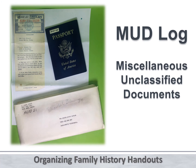My dad was an architect and business owner and he had great organizational ideas. He had a file at home he called his MUD file — that stood for Miscellaneous Unclassified Documents. He would put a number in the corner of each item, for example MUD60, and then put these all in folders, about 50 per folder in numerical order, and kept a log of what item was associated with each number. His MUD folders held things like Mom's Social Security card, his passport, and their patriarchal blessings.